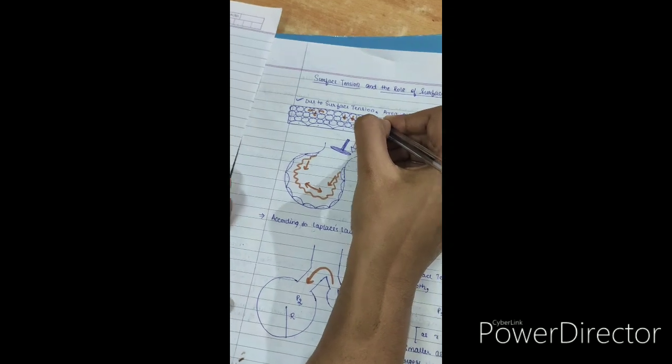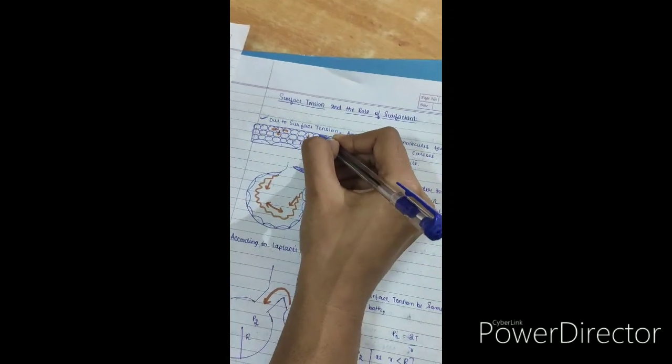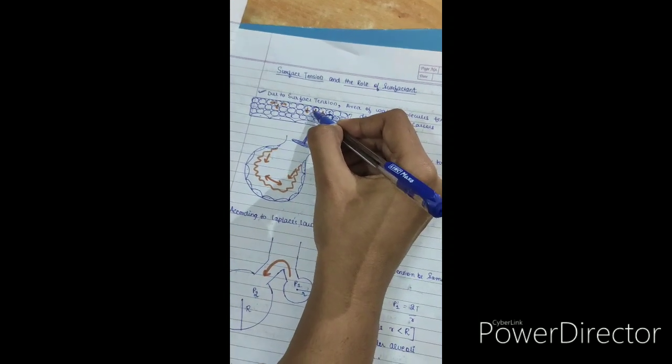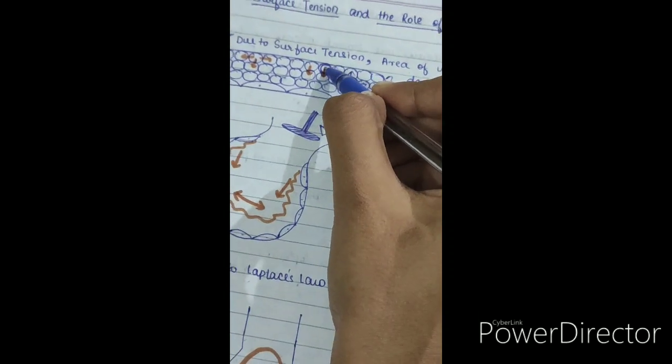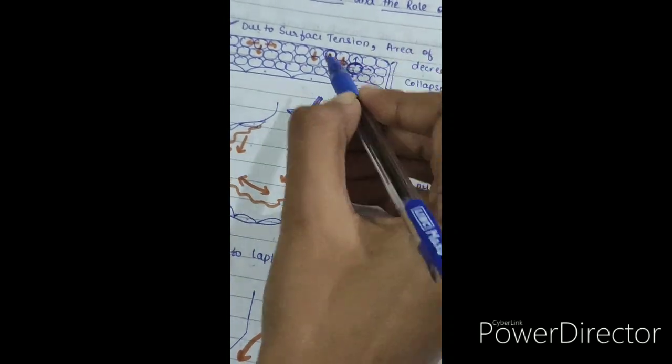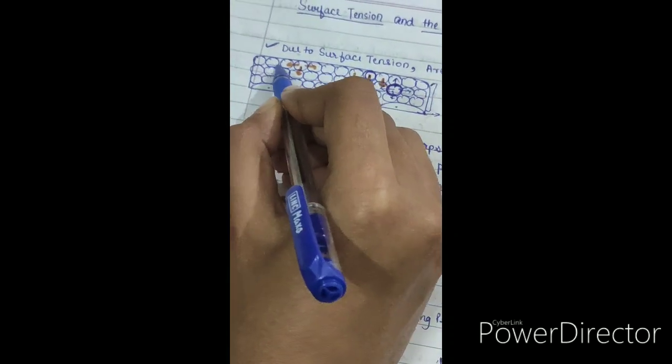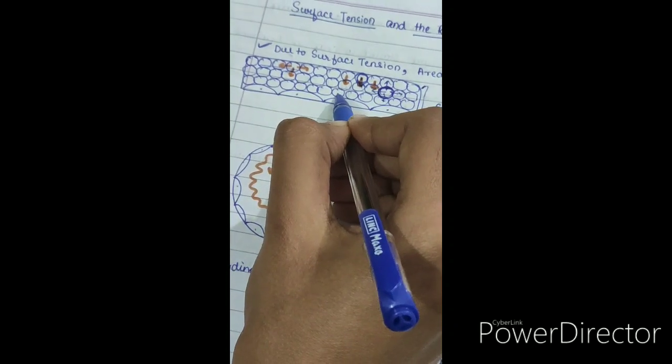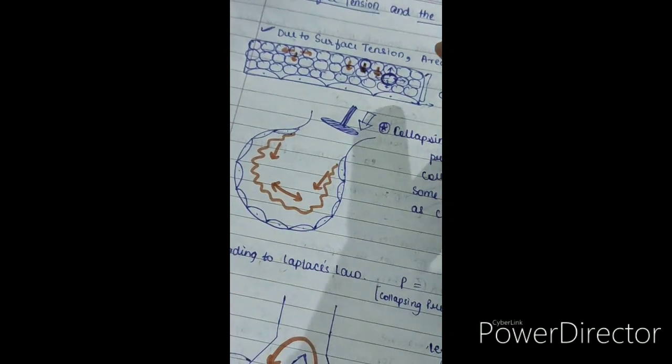This is under the attractive pull from all four sides. But if we talk about the water molecule over the surface, this is under a net attractive pull which is directed downwards. This is why the water molecules in the superficial layer are trying to get to the deeper layers, which results in decreasing this area.